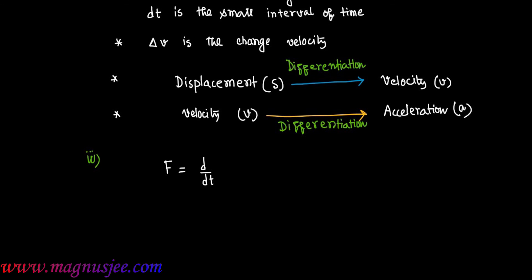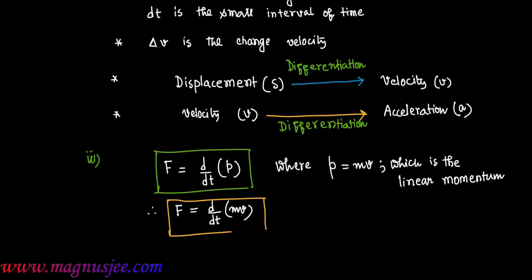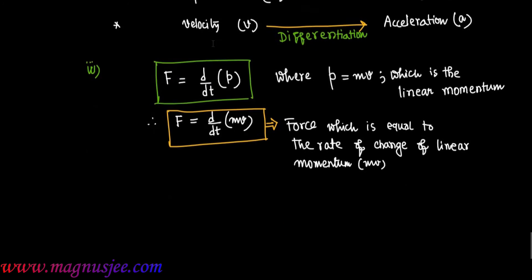Application number 3: force F = d/dt of p, where p = mv is the linear momentum of the body. Therefore F = d/dt of (mv). F is the force acting on a body of mass m moving with velocity v, and it equals the rate of change of linear momentum mv.